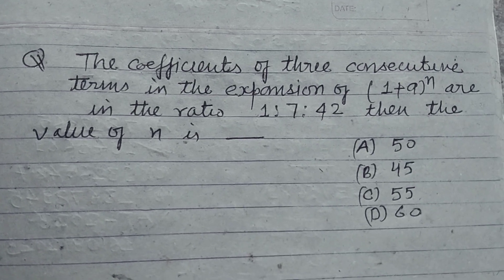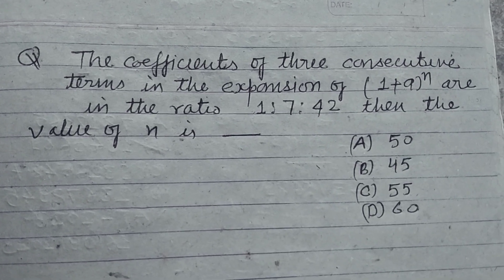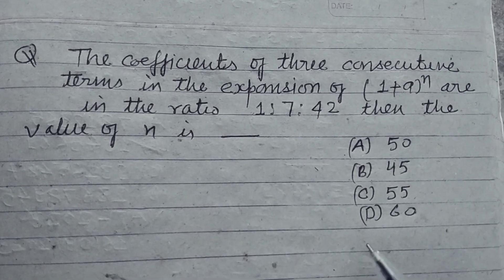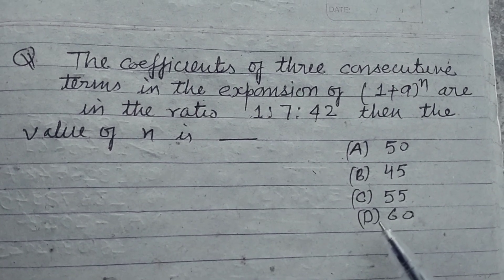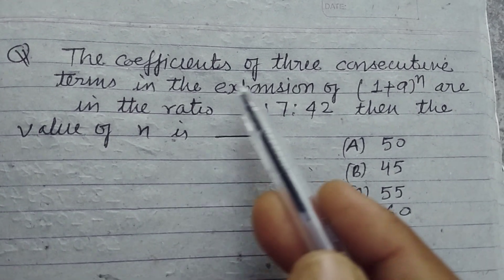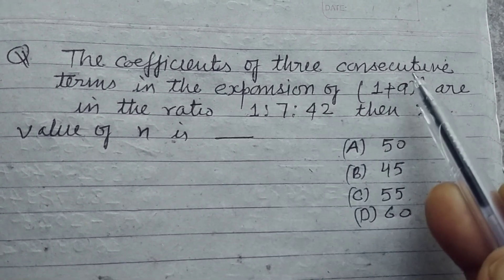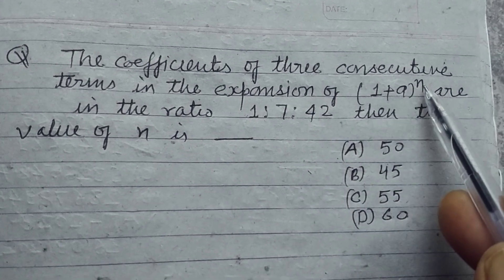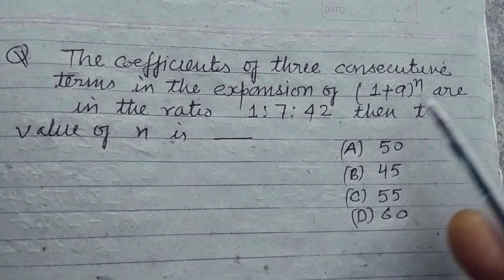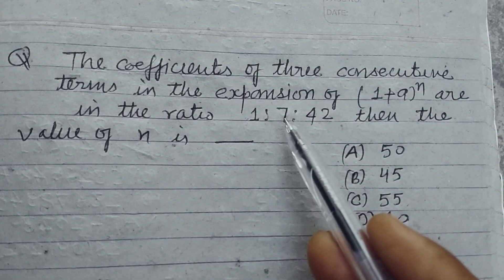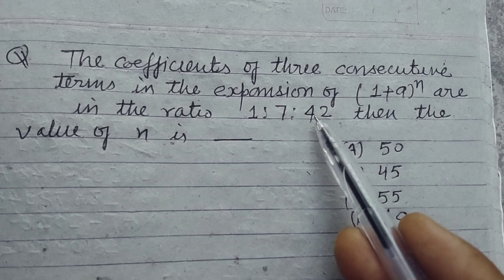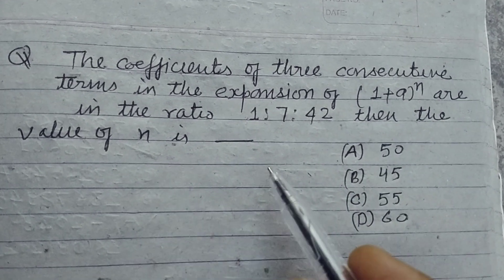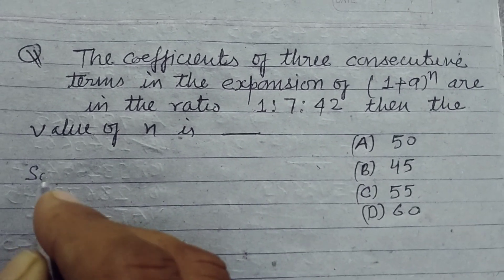Hello students, very welcome to this YouTube channel. This is a question based on binomial terms. The coefficient of 3 consecutive terms in the expansion of 1 plus a to the power n are in the ratio 1:7:42. Find the value of n.